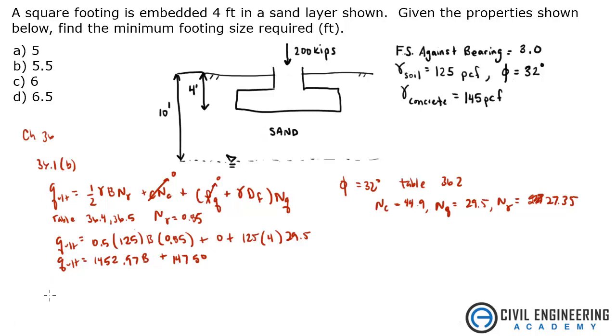We were given a factor of safety. And with that, we can solve for, get a second equation and then solve for our dimensions for the footing. So there's an equation 36.4 that says that q allowable equals q net over f. Other books will list this as q allowable is q ultimate over the factor of safety. I like this better. So the allowable is equal to the ultimate, which we just solved up here, divided by 3. So 1452.97 b divided by 3 plus 14750 divided by 3. That equals 484.32 b plus 4916.7.